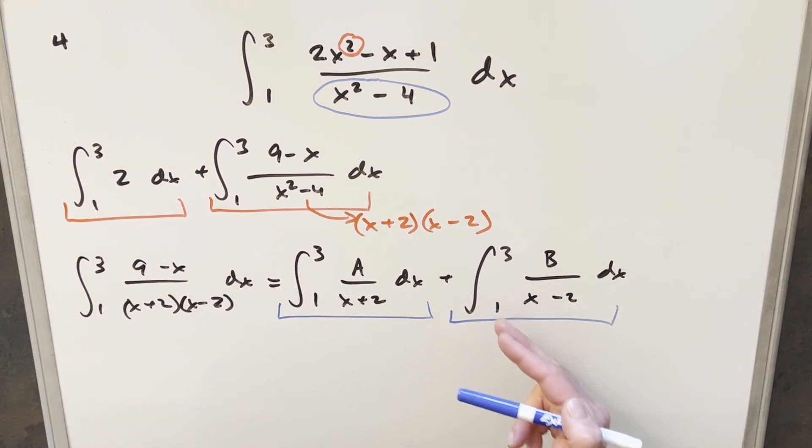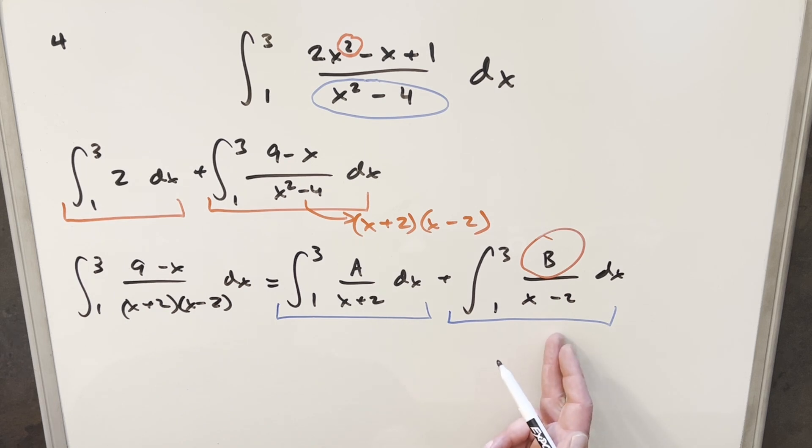But here we still have a problem because when x equals two, we're still dividing by zero and it's not continuous at that point. So what I want to do is just go ahead and integrate this second integral. And I'm not even really concerned with this B. So we'll just leave it as B and we can come back to it if we need to.